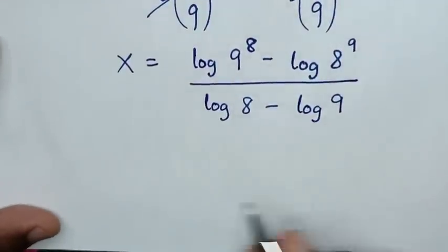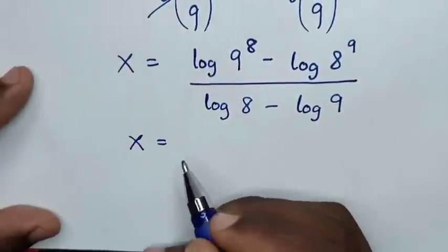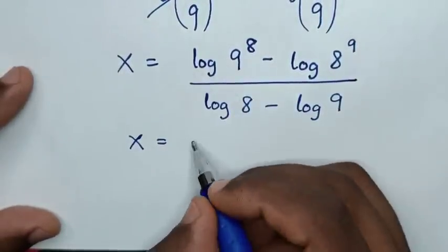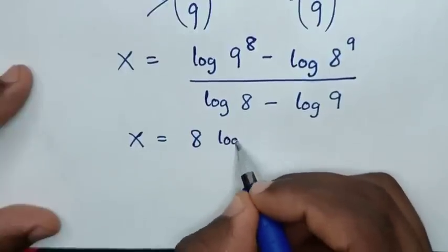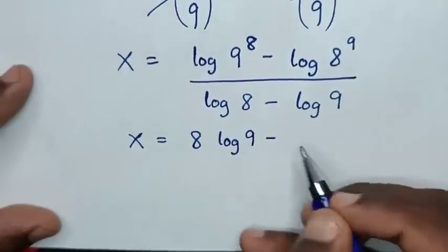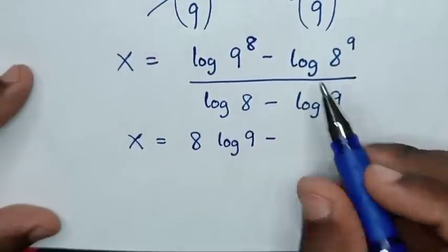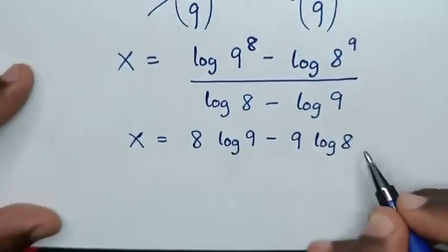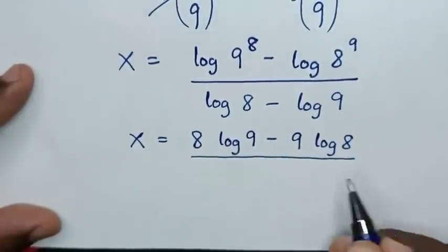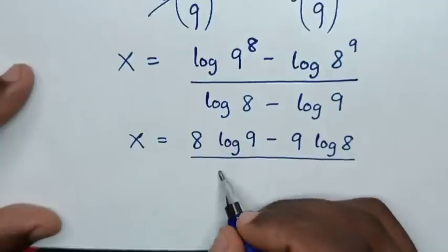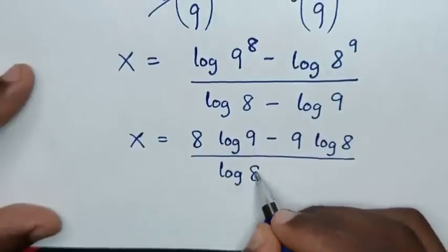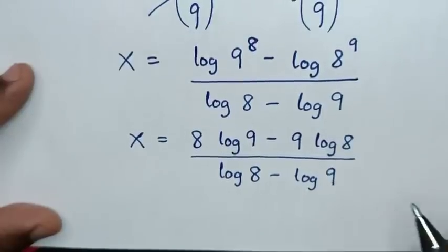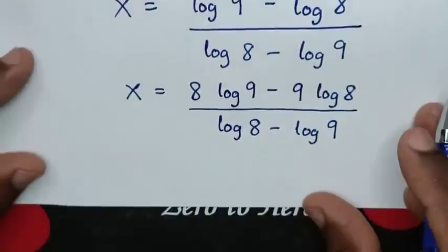Then, in the next step, our equation will be x is equal to: this power of 8 will move to the base, so it will be 8 log of 9, minus this power of 9 will move to the base, so it will be 9 log of 8, then over log of 8 minus log of 9.